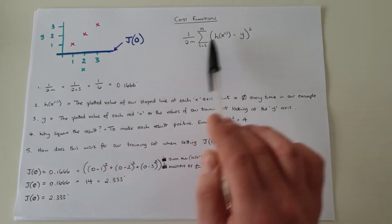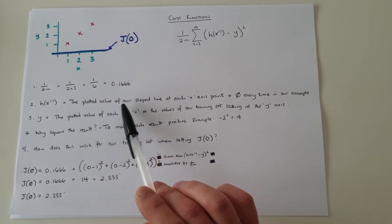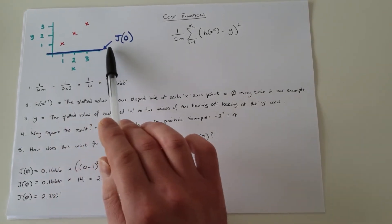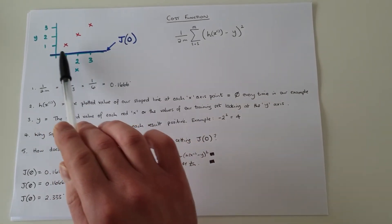Number two, let's deal with the h of xi. This is the plotted value of our slope line at each x-axis point, so it's this blue line here. It's always zero.